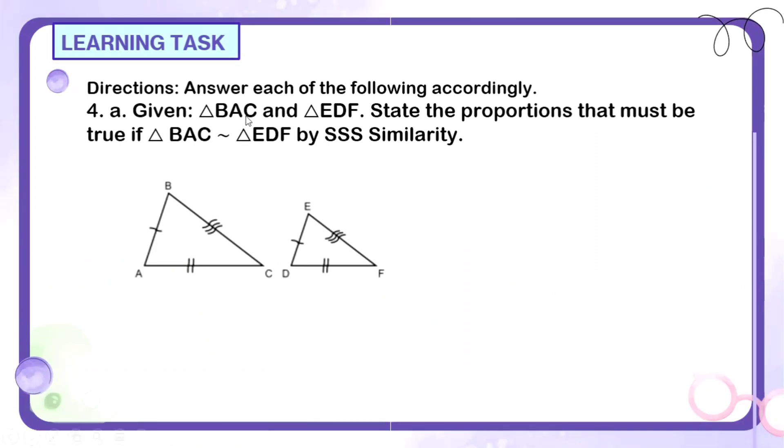Next. Given triangle BAC and triangle EDF, state the proportions that must be true if triangle BAC is similar to triangle EDF by SSS similarity. Kaya madali lang to kasi SSS similarity lang naman or side, side, side. So we can say that segment BA over segment ED, so ito yung kapareho niya ng pwesto, i-over lang natin, is equal to segment AC, kapareho niya, is yung DF, and segment BC, kapareho niya yung segment EF. And by that, we can say that triangle BAC is similar to triangle EDF by SSS similarity.